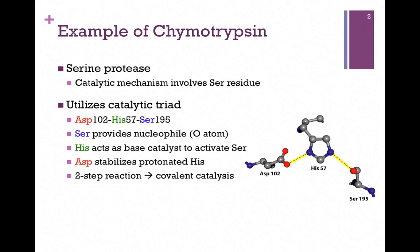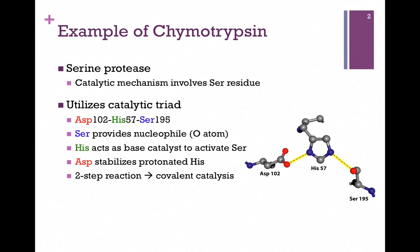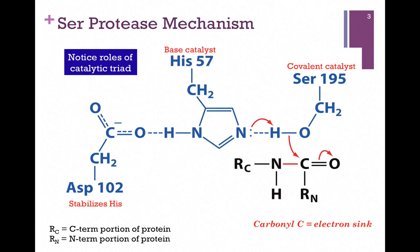Serine provides the nucleophile. Histidine is going to act as a base catalyst to activate the serine residue, and later it will be an acid catalyst. Aspartate is playing more of a supportive role — it's helping to stabilize the histidine in the course of its reaction. Overall, the reaction mechanism is one of covalent catalysis, which involves a two-step reaction where the enzyme actually forms a covalent bond with its substrate.